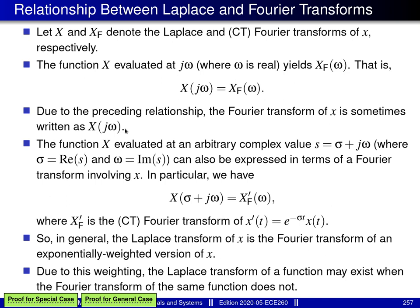Knowing that the Laplace transform evaluated on the imaginary axis gives the Fourier transform, one might wonder if any relationship exists when the Laplace transform is evaluated at an arbitrary point in the complex plane. In particular, X evaluated at an arbitrary complex value s = σ + jω, where σ is the real part and ω is the imaginary part, can also be expressed in terms of a Fourier transform.